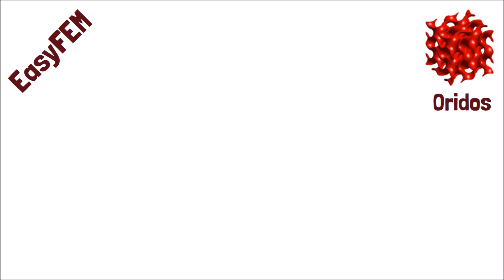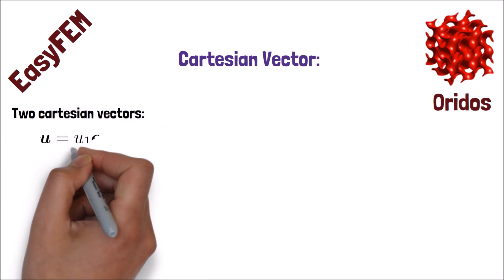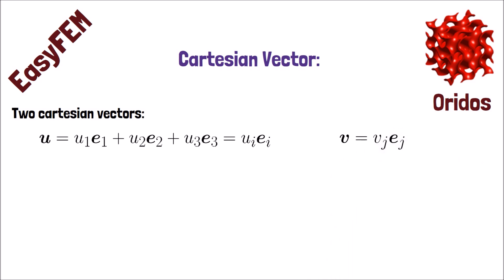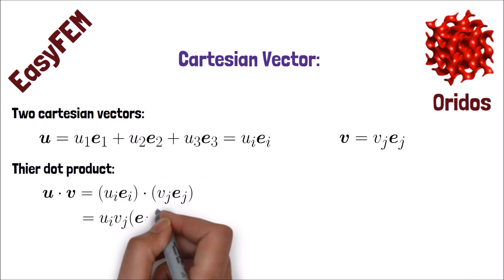You might ask how to do the Einstein Summation over the dot product of two vectors. Let's assume we have two Cartesian vectors, U and V, defined based on their basis vectors. We can represent these two vectors as UIEI and VJEJ, as you can see on the screen. Next, let's perform a dot product on these two vectors. We will end up with UIVJEI dot EJ.